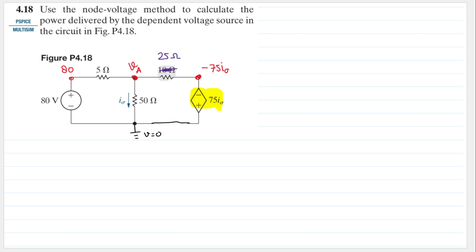Now let's assume the direction of the current. Maybe this current is going to the right, this one is going down following this arrow here, and let this part here go to the right. Now we can use KCL at node Va.